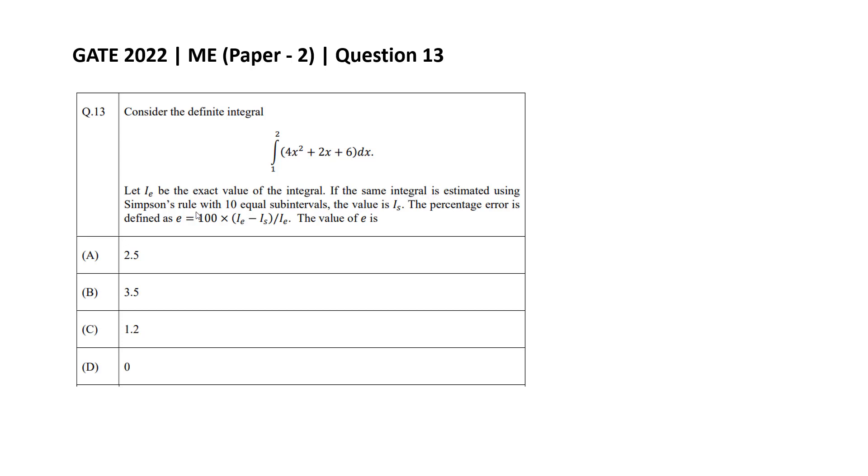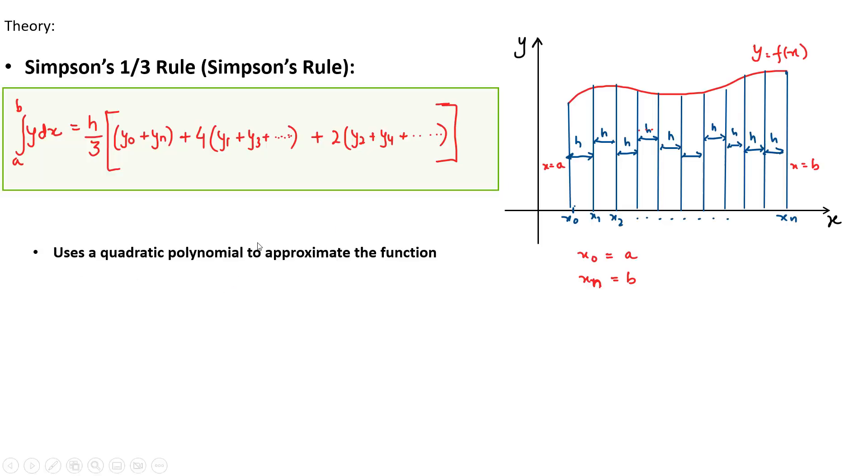If the same integral is estimated using Simpson's rule with 10 equal subintervals, the value is I_s. The percentage error is defined as e equals 100 times (I_e minus I_s) divided by I_e. The value of e is given in four options. Since the question has an even number of subintervals, we can use Simpson's one-third rule.